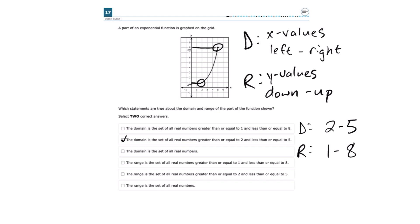Our answer choice should look like: the range is the set of all real numbers greater than or equal to 1 and less than or equal to 8. This fourth answer choice is exactly what we're looking for. It says select two correct answers, and we have our two correct answers. That's how you do number 17.